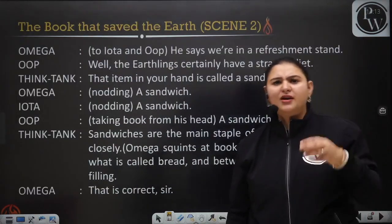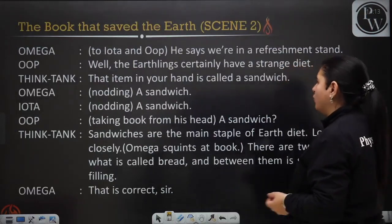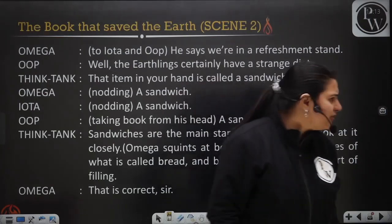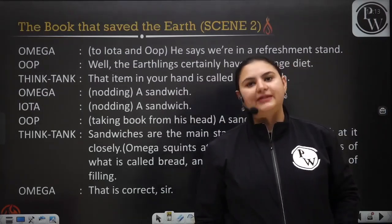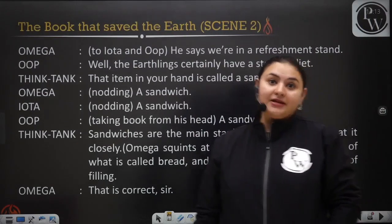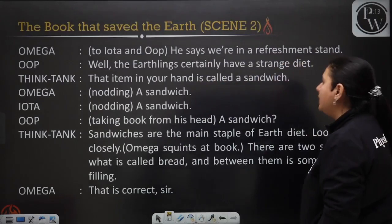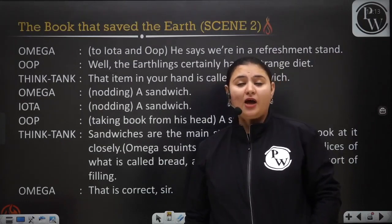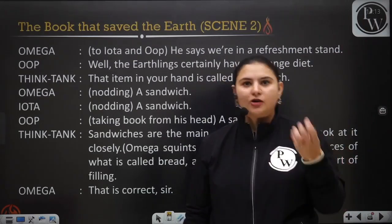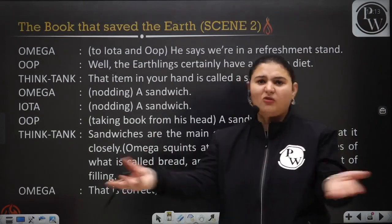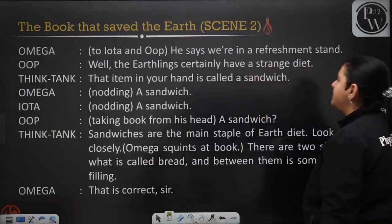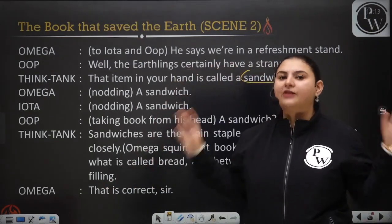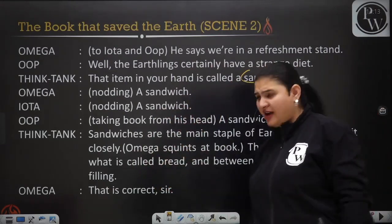Omega tells Iota and Ope: we are in a refreshment stand. Even they are doubting, because they don't actually think it's a refreshment stand. Ope says: well, the earthlings certainly have a strange diet. They are not able to believe their eyes that this is a refreshment stand. Think Tank declares: that item in your hand is called a sandwich. And everybody agrees — a sandwich, a sandwich, a sandwich.